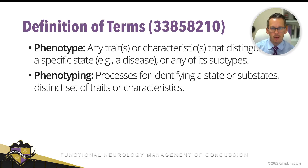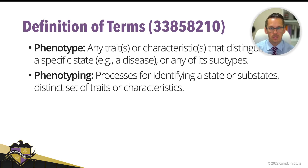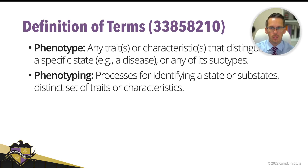So what is a phenotype? A phenotype by definition is any trait or characteristic that distinguishes a specific state — for example, a disease — or any of its subtypes. And phenotyping is the process for identifying a state or substates of a distinct set of traits or characteristics. So for example, we can have a condition like concussion, and concussion can be broken down to a certain number of phenotypes based upon their presentation and their characteristics.